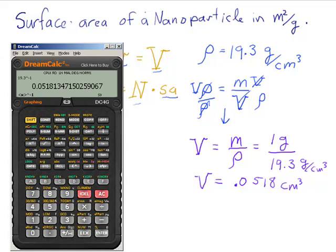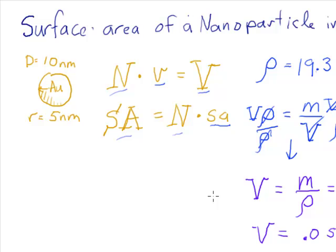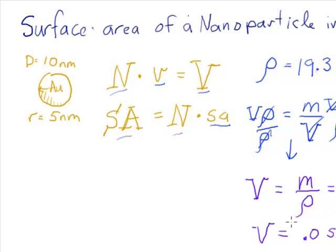Okay, so I'm going to keep that in mind and I'm going to go on to the next part of the problem. And so I have my big V. Now if I had my little v, I could rearrange this equation and solve for N.